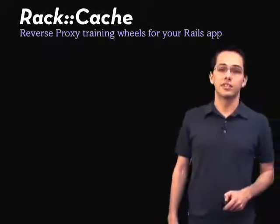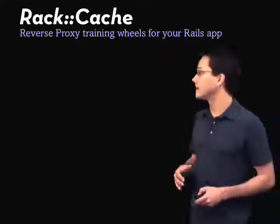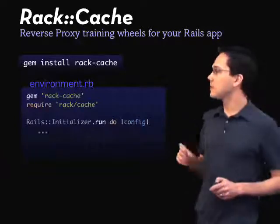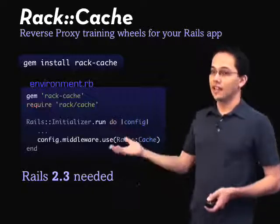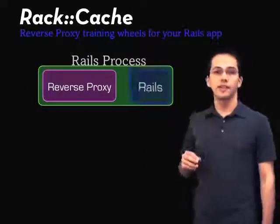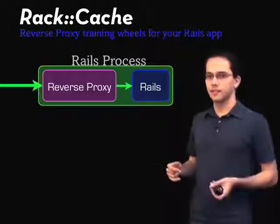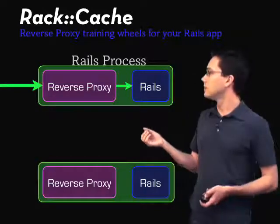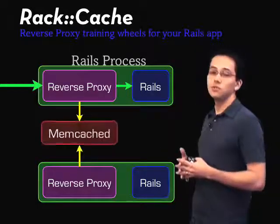Recently, Ryan Tomayko released a Rack extension called Rack Cache, which is basically a reverse proxy for your Rails application and it's really easy to plug in. All you have to do is run gem install rack-cache, and if you're using Edge Rails, you can install it as middleware — that's all you have to do. Rack Cache runs inside your Rails process: if a request comes in, it first hits the reverse proxy, and if needed it falls back to Rails. Rack Cache was built to use either a shared file cache or even memcached, so multiple Rails instances can share the same cache.